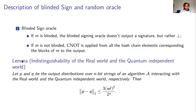We were able to show that our quantum independent world is indistinguishable from the real world to any adversary. More precisely, if P and Q are the output distributions over n-bit strings of an algorithm interacting with the real world and the quantum independent world respectively, then the statistical distance between the two distributions is upper bounded by an expression that, since n is the security parameter (quite large) and W is constant and l is polynomial in n, is negligible — meaning the two distributions are close.